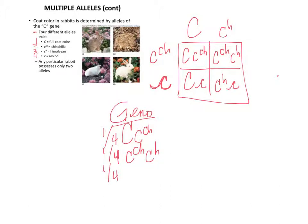One-fourth C with the H and big C, one-fourth big C little c, and one-fourth C with the H little c. Now for phenotypes, we just need to look at rank here.